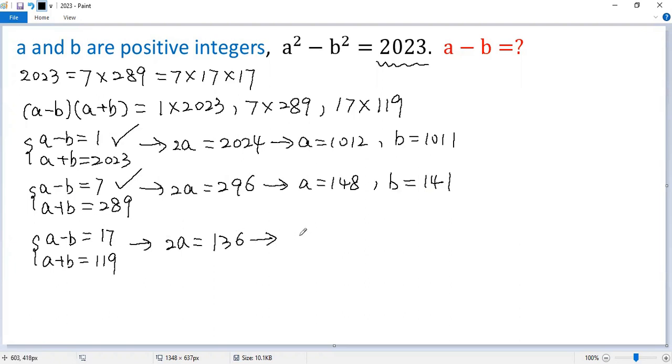So we get three solutions to the given problem. A minus b equals 1, or 7, or 17.